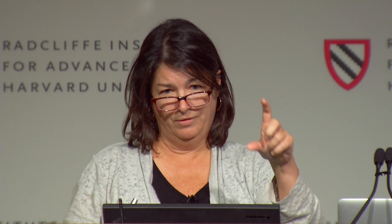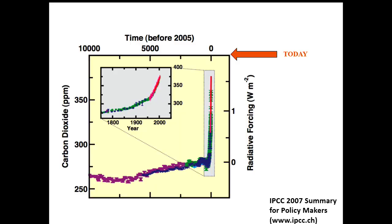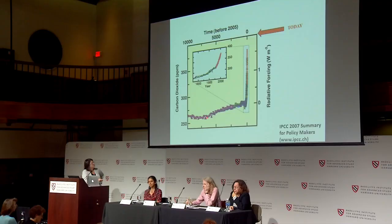To wrap up: what I know for sure is that climate is changing naturally all the time, and small variations in incoming solar radiation, albedo, and greenhouse gas concentrations can lead to large and sometimes rapid changes. The activities of seven billion people are capable of causing effects of this magnitude. Here's the CO2 record of the last 10,000 years — the Holocene, the warm window within which human culture and agriculture flourished at about 270 parts per million. A subtle rise starts about 5,000 years ago, likely due to early agricultural deforestation, and then here is the 18th century and the beginning of the Industrial Revolution.